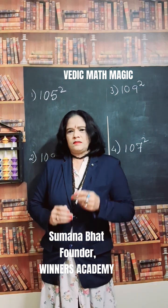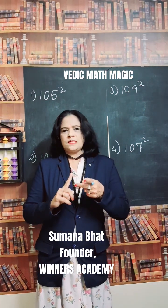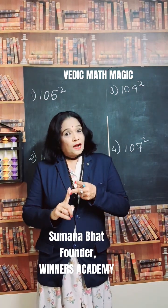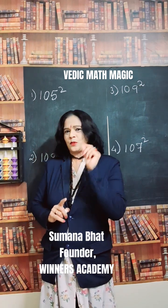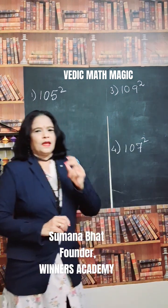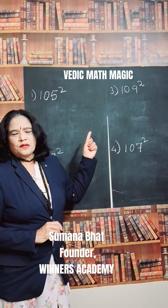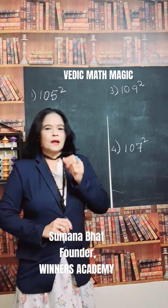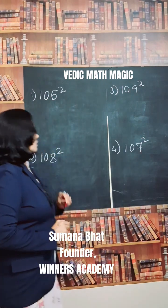It has three steps: first, find the difference; second, add the difference; and third, square the difference. In a fraction of seconds you can find the square of these numbers using this Vedic mathematics sutra.